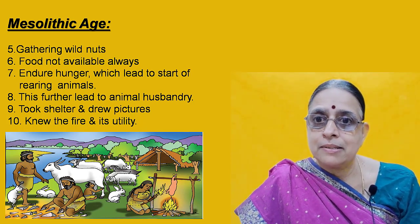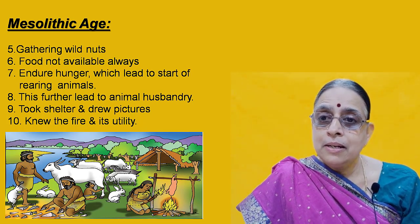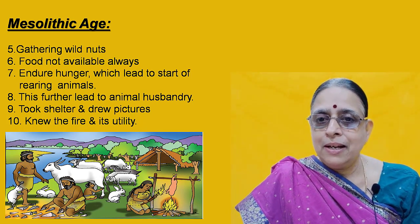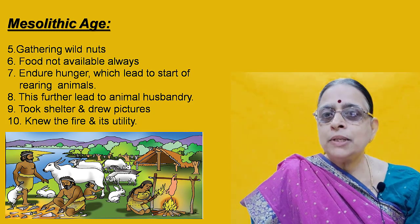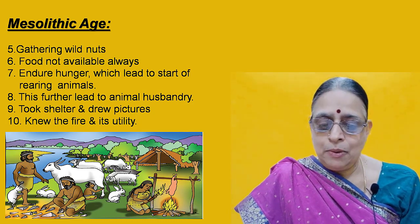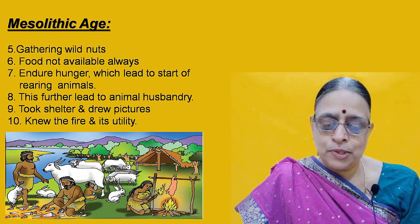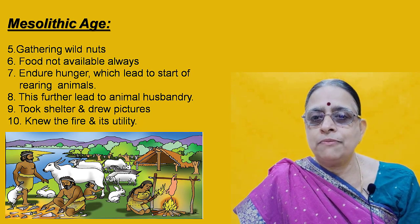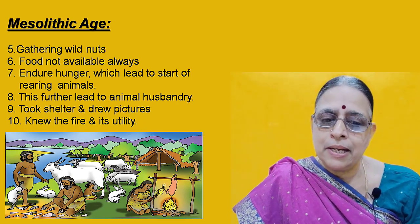In your textbook there is a picture — if you look at it, you will get an entire picture of the Mesolithic Age: what cattle he reared, how he used fire, what animals he kept, and what the men were doing. They were carving animals and you can also see stone weapons and the use of fire. He knew fire and its utility — utility means usefulness. Now you are clearly aware of some facts and differences between the Paleolithic Age and the Mesolithic Age.